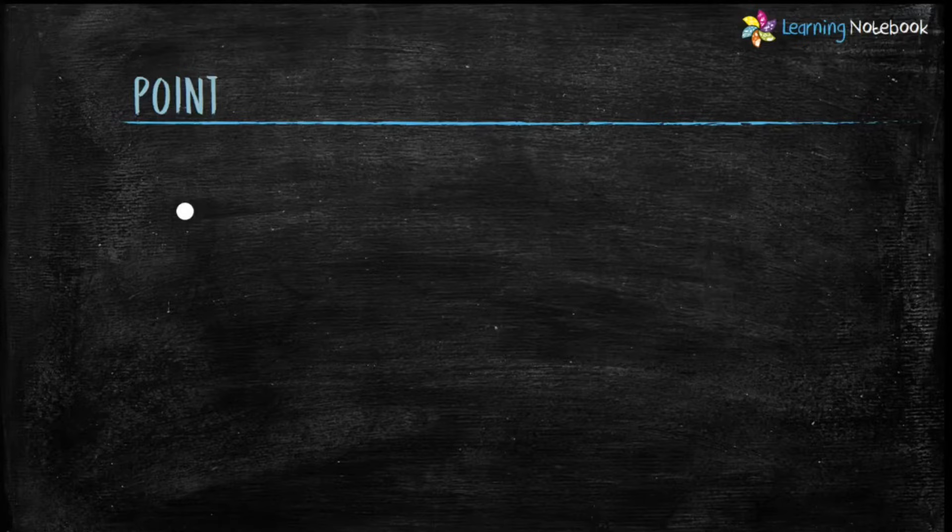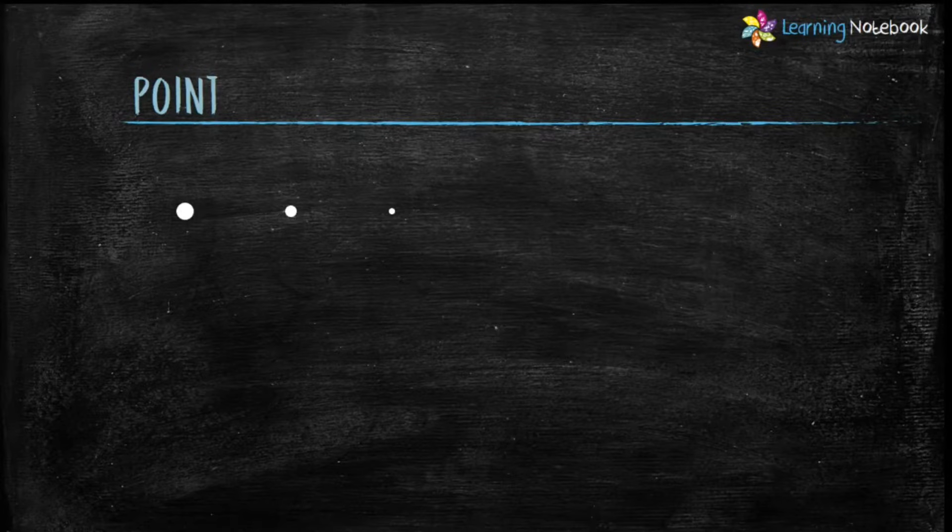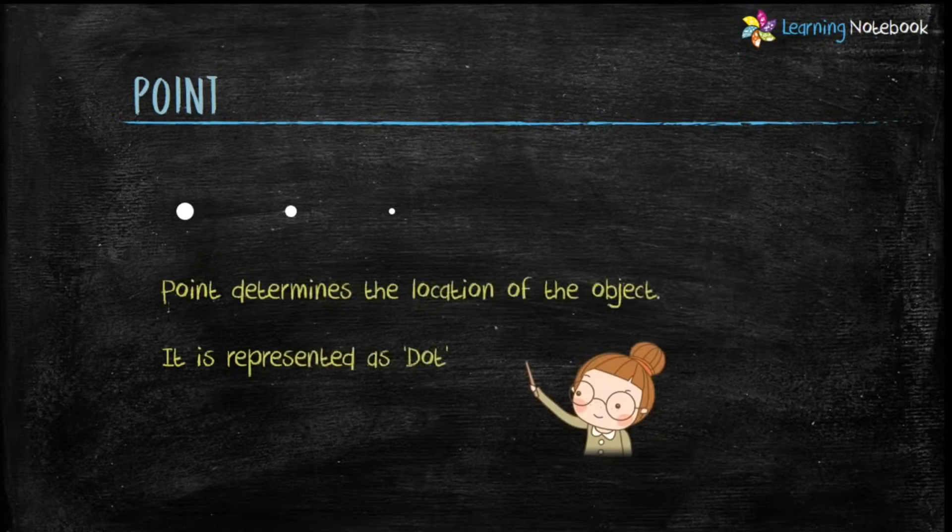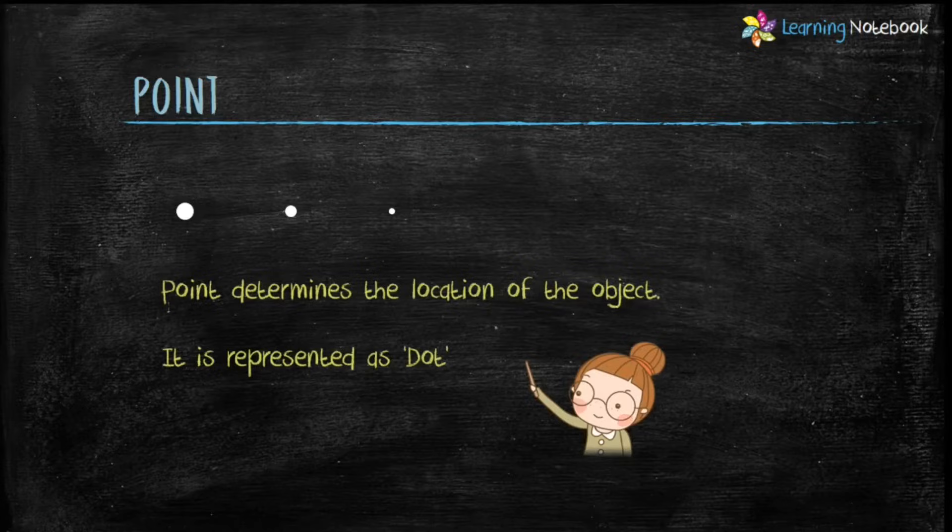Students, take a pencil and mark a dot on a paper. You will see the sharper is your pencil, the thinner is the dot, like shown here on this board. This is called point. Point determines the location of the object. It is represented as a dot.